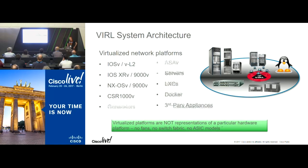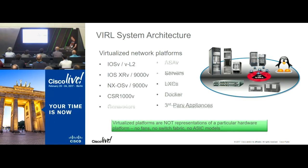The important thing to note is that the virtualized platforms aren't representing a specific hardware platform — so we don't have things like fans, switch fabric, or ASIC models. For control plane routing policy, it's very close to the real network image, which is really powerful for change validation and learning. When it comes to more advanced features with hardware, especially in things like NXOS, those capabilities aren't all there yet today. So for some use cases it's very powerful, and for some others it's still a work in progress.